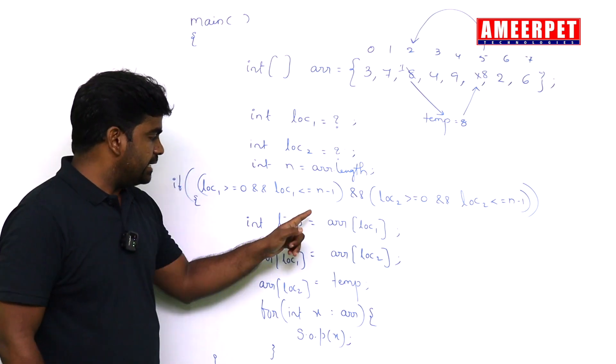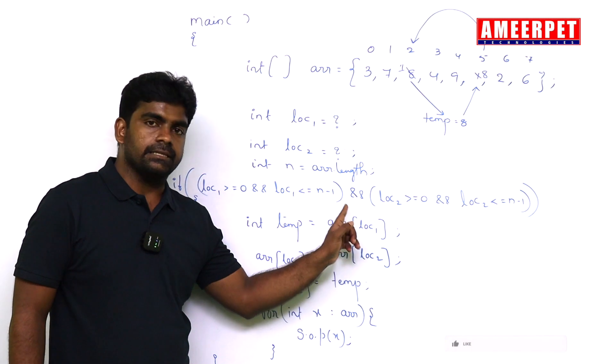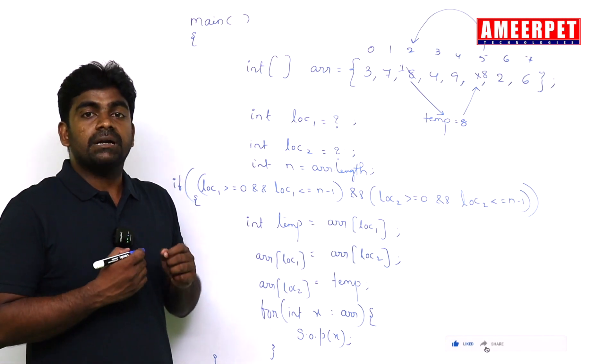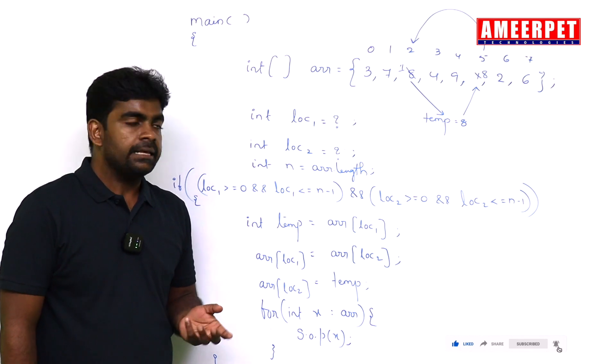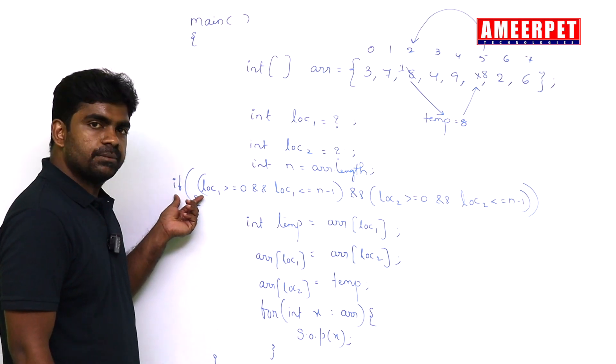In the first case directly, we are swapping by taking the locations. But it's not guaranteed the locations are valid. Okay. Then we are adding some condition.